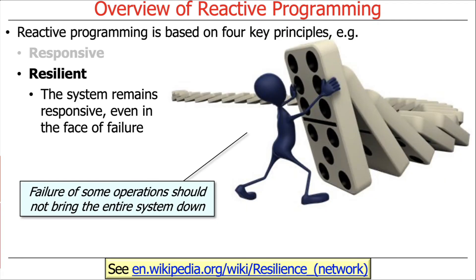The next principle is resilience — the idea that the system remains responsive even in the face of failure or at least partial failure. Obviously, if you experience a full power grid outage or the entire network goes down because someone cuts an underground cable with a backhoe, you may not recover. But you'd like things to work as long as only some pieces of the computation are failing. Failure of a few operations shouldn't bring the entire system down.